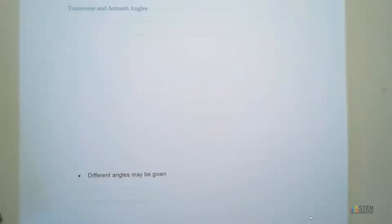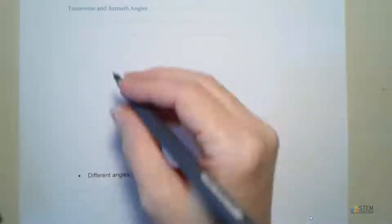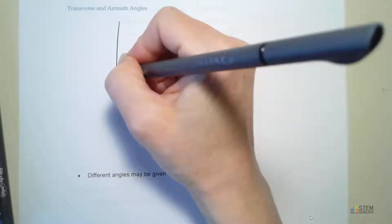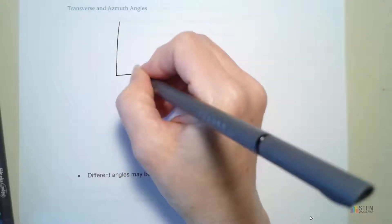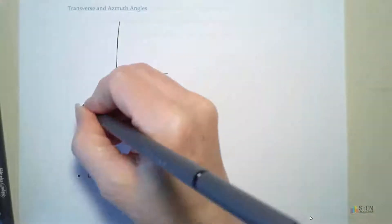Transverse and azimuth angles. A lot of students don't like these — they don't like them because they're hard to imagine what's going on, but hopefully you'll be able to pick it up pretty simply. So let's draw out our 3D system to get started.